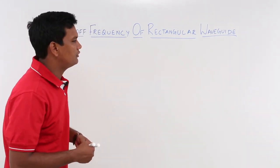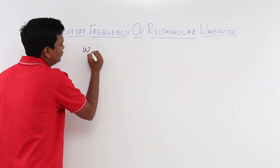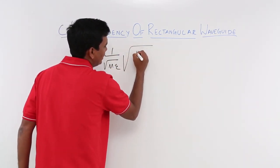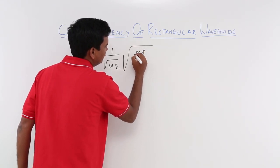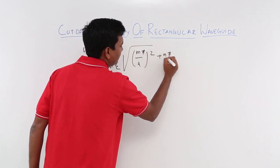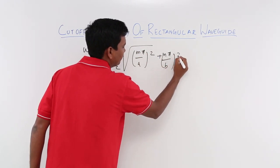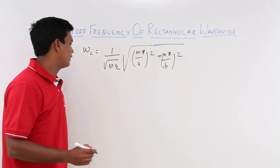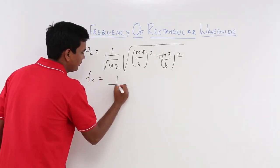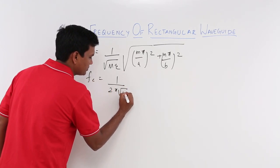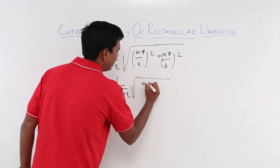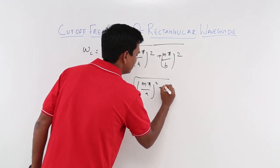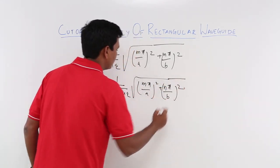What will be the expression for that? If you derive it, you will get the expression: omega_c is nothing but 1 over sqrt(mu*epsilon) times the square root of (m*pi/a)^2 + (n*pi/b)^2. So the cutoff frequency f_c will be 1 over 2*pi*sqrt(mu*epsilon) times the square root of (m*pi/a)^2 + (n*pi/b)^2.